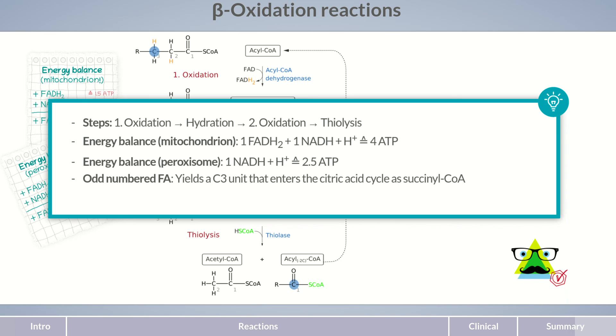With odd-numbered fatty acids, a single C3 unit, propionyl-CoA, remains as a residual fragment. It can be converted into succinyl-CoA and introduced into the citric acid cycle. The double bond formed during beta-oxidation is a trans-double bond, therefore, the breakdown of unsaturated fatty acids with a cis-double bond requires conversion into a trans-double bond.